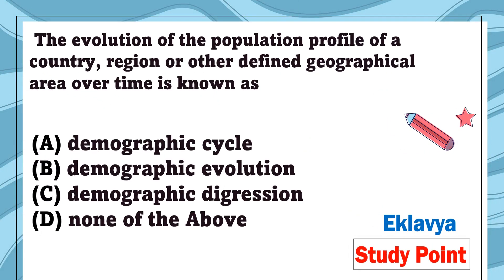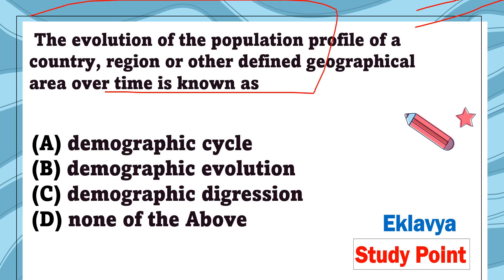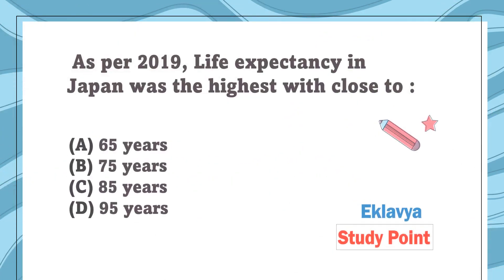Question 30: The evolution of the population profile of a country, region, or other defined geographical area over time is known as — demographic cycle, demographic evolution, demographic degradation, or none of the above. The correct answer is demographic cycle.